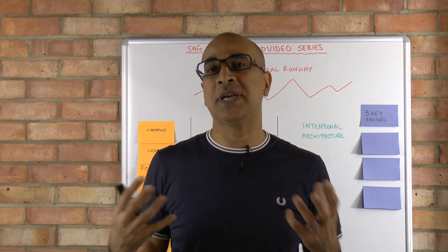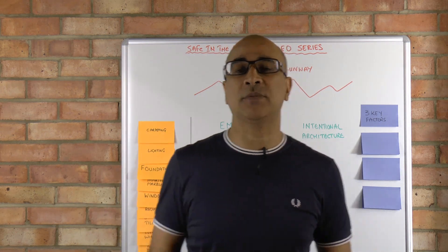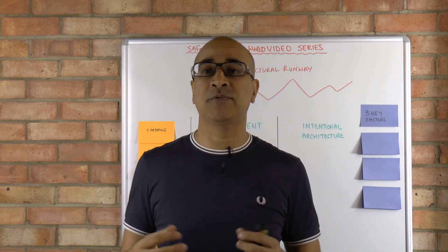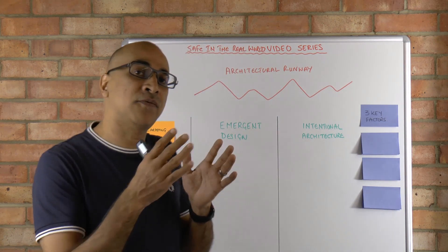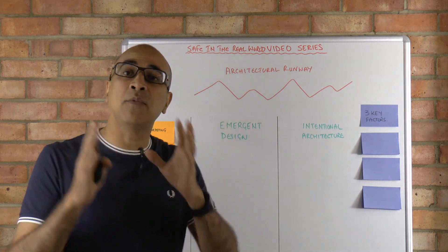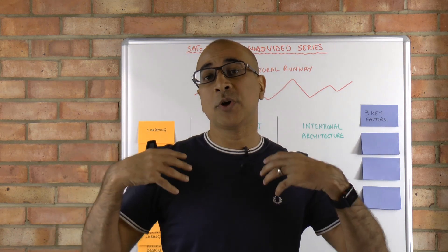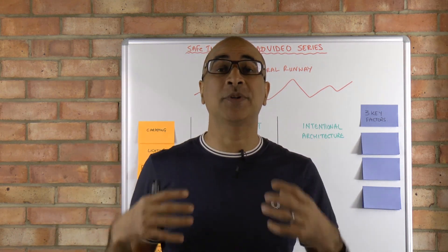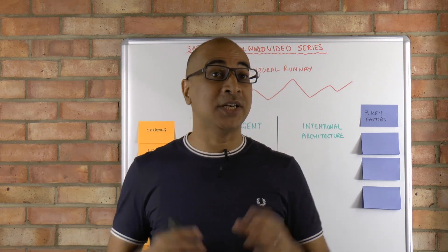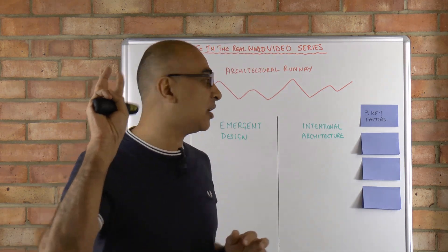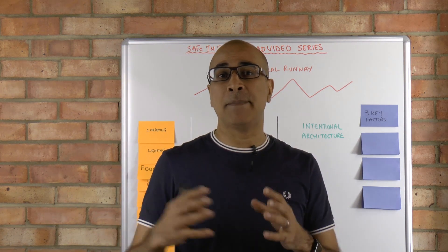So the question is how do we get the right balance? There are three factors that I'd like to bring to your attention that are really helpful for determining which elements should fall on the emergent design side and which should fall on the intentional architecture side. We're going to go through an example to illustrate this. But first, let's look at the three key factors that are important for getting that right balance.